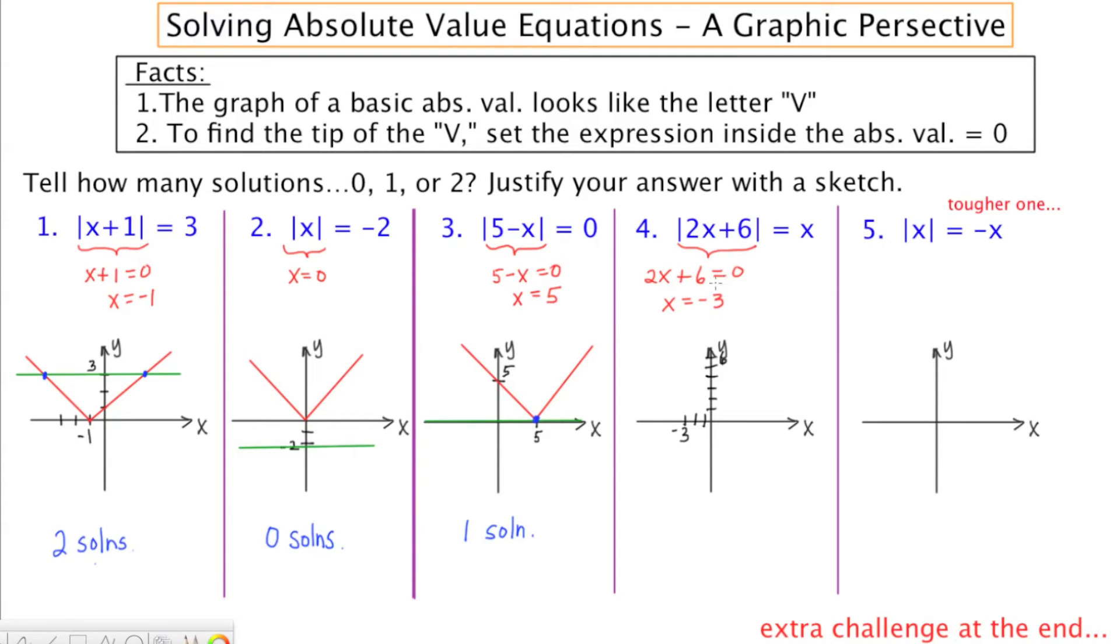But this time, when we draw the V, it's going to have a little steeper appearance to it because of the 2 that precedes the X. The slope of the two arms of the V will have a slope of 2 and minus 2, depending on the arm, which is going to make the V look a little bit stretched vertically.